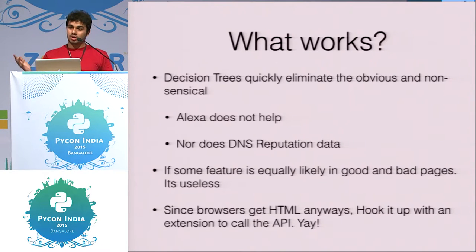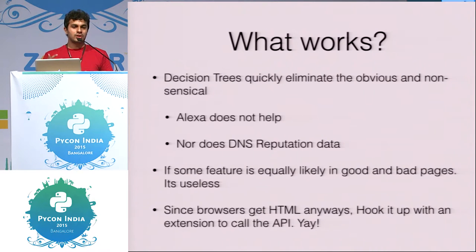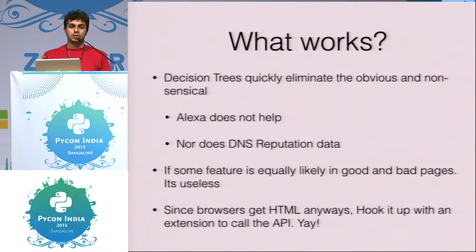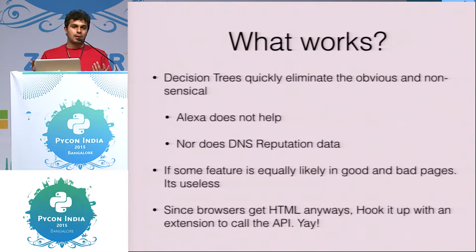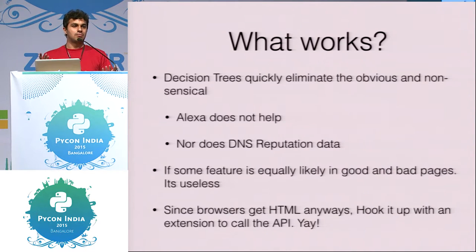You might think that phishing URLs appear on very new domains — someone registers a domain last week and uses it maliciously this week — so you could assign a reputation score. But this doesn't work either, because attackers keep domains for a long time, use dynamic DNS services, or may have moved from malware activity to phishing, so domain reputation alone isn't reliable.